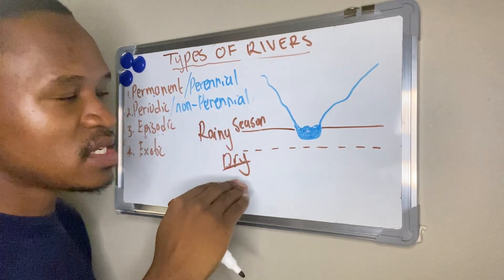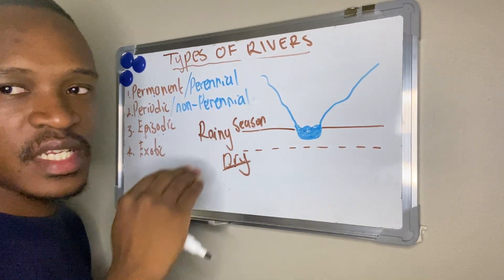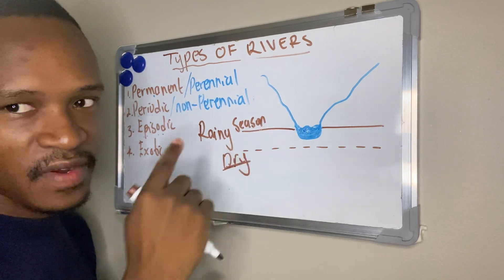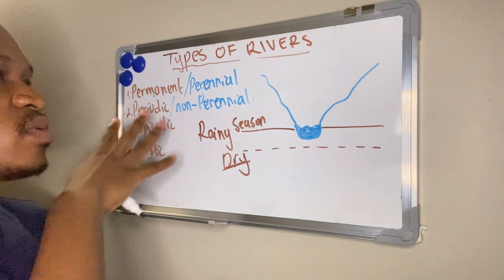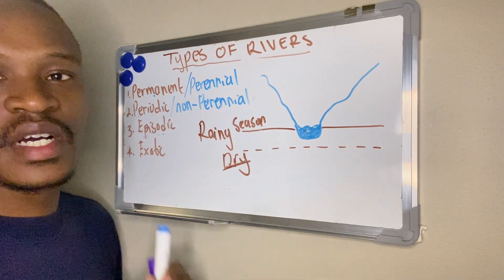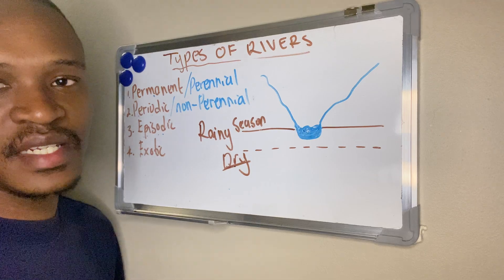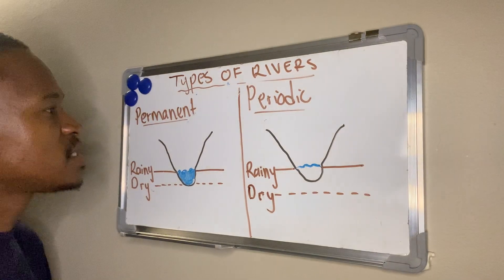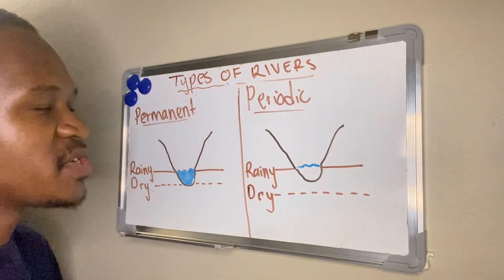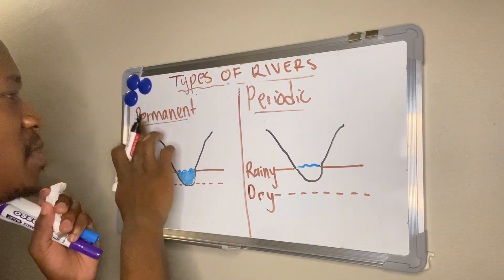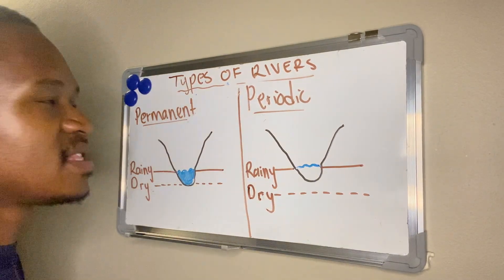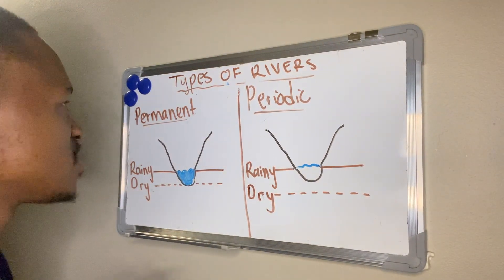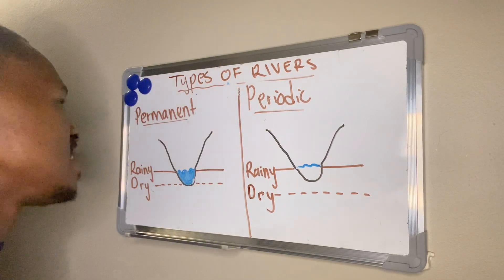Knowing the position of the water table in relation to our river or riverbed is going to help us distinguish between these four rivers. Let me start with the permanent river and the periodic river — the PP. The other two start with EE: episodic and exotic.